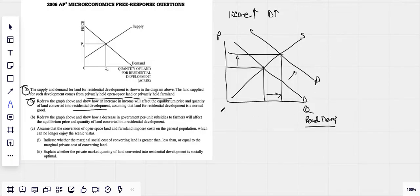Yeah, I think that's good. So A there, easy enough. Let's look at B. Redraw the graph above and show how a decrease in government per unit subsidies to farmers will affect the equilibrium price and quantity. Again, of quantity of land converted into residential development.